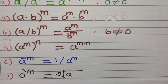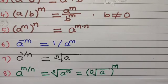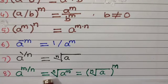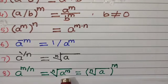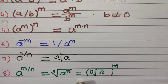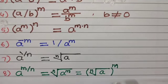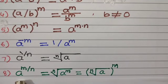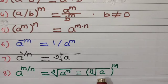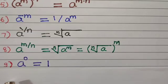The next property: a to the power m upon n is equal to the nth root of a to the power m. Also, we can express this as the nth root of a, raised to the power m. So a to the power m upon n can be expressed either way. Property number 9: a to the power 0 is equal to 1. Take any number — if its power is 0, it is always equal to 1.